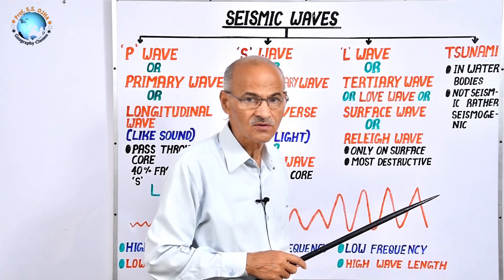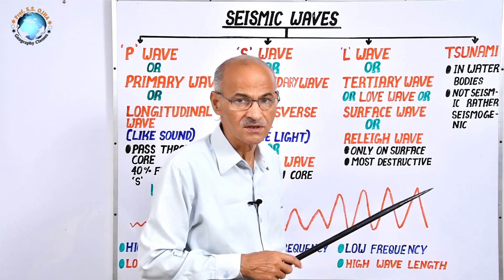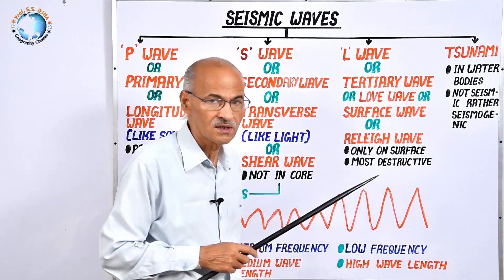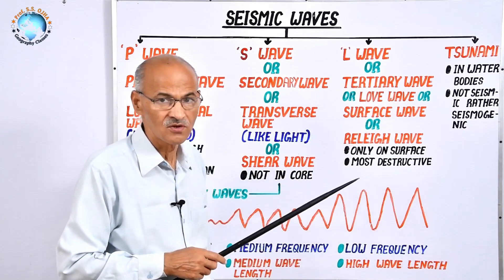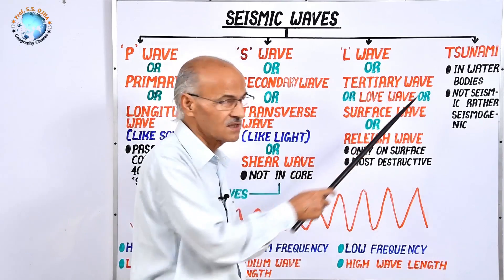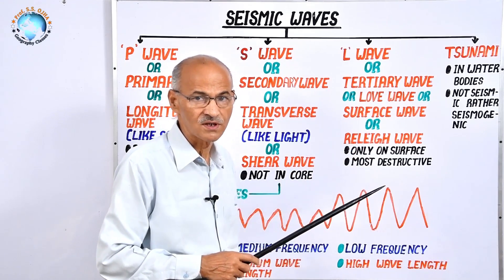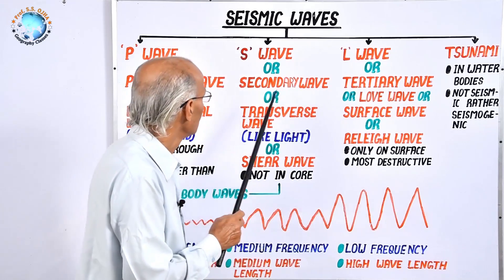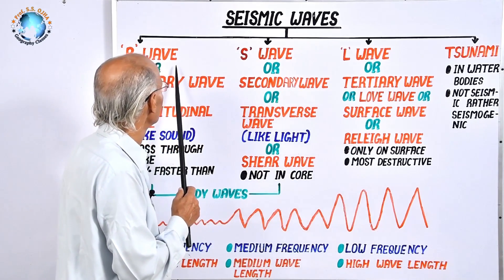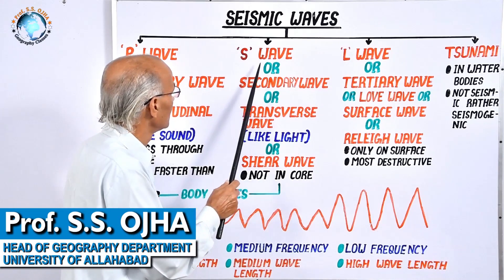If there is a question in UPSC asking which of the following is not a seismic wave, you will tick tsunami — it is not a seismic wave, but rather a seismogenic wave. Now let us understand the difference between P wave, S wave, and L wave.